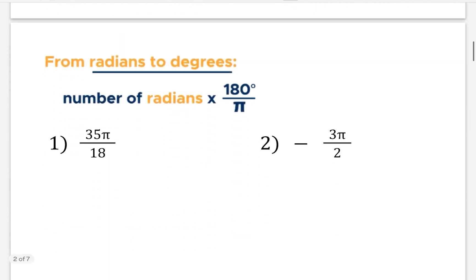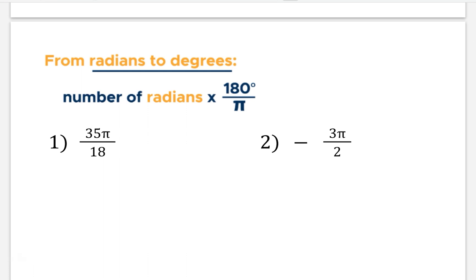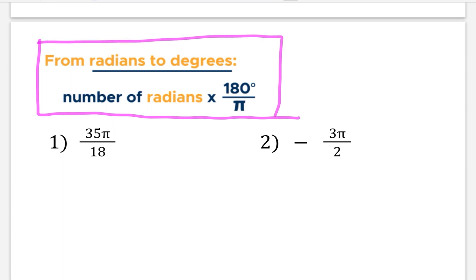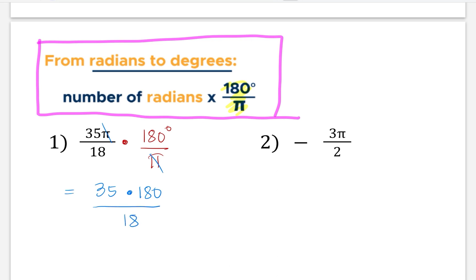How about converting from radians to degrees? There is a formula we are going to use: given the number of radians, we multiply it by the inverse of the formula we just used, which is 180 degrees divided by pi. For problem number one, we are going to multiply 35 pi over 18 with 180 degrees over pi. First, we cancel the pi, then multiply straight across — 35 times 180 over 18. Using our calculator and simplifying, that gives us 350 degrees.